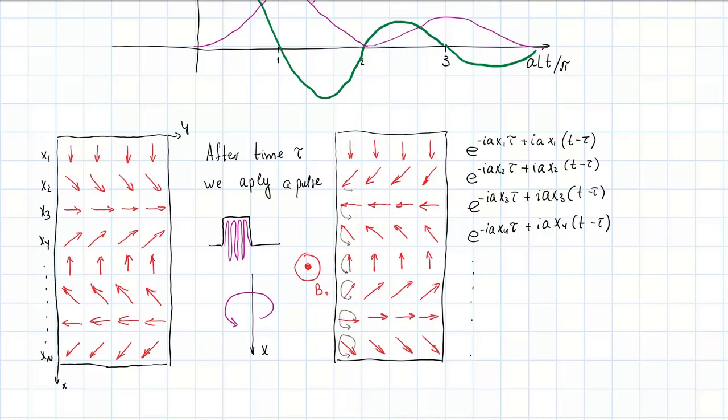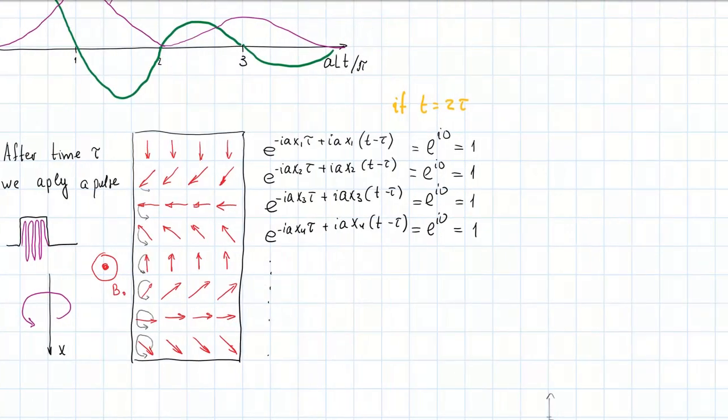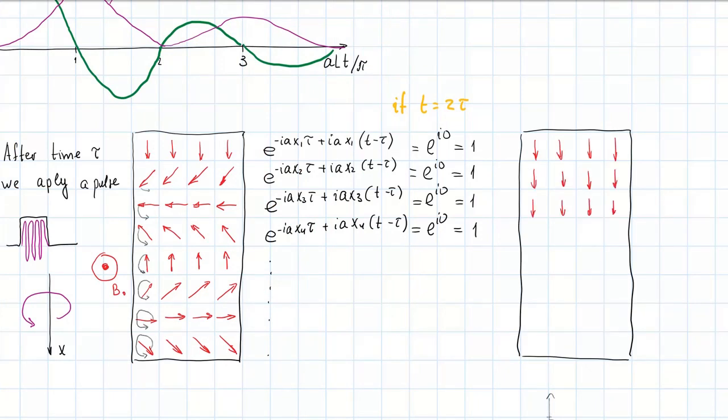Very interesting. Let us look now at the time when T is equal to 2 tau. We will see that at 2 tau all the exponential factors describing the spin magnetic moments become equal to 1. It means that all spin magnetic moment vectors in the sample are pointing in the same direction along the X axis as it was at the beginning. Such a refocusing of the spin magnetization which leads to the increase of the observed signal is called spin echo.